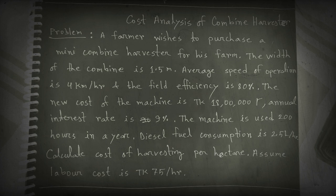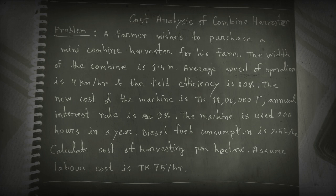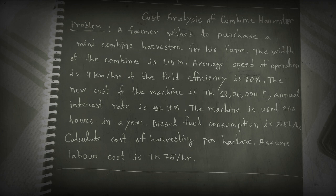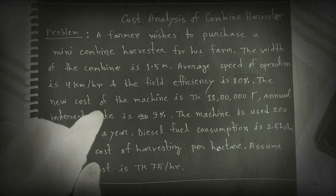In Bangladesh, the annual interest rate is 9%. The machine is used 200 hours in a year. Diesel fuel consumption is 2.5 liters per hour. Calculate the cost of harvesting per hectare, assuming the value of labor cost is 75 taka per hour.